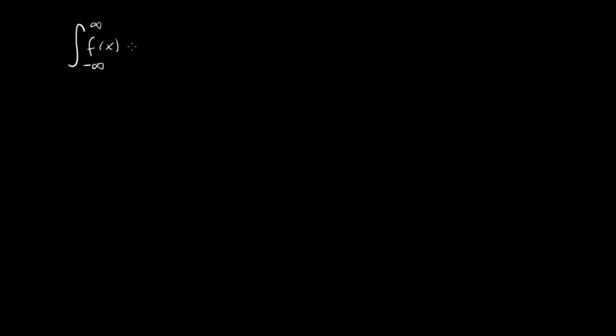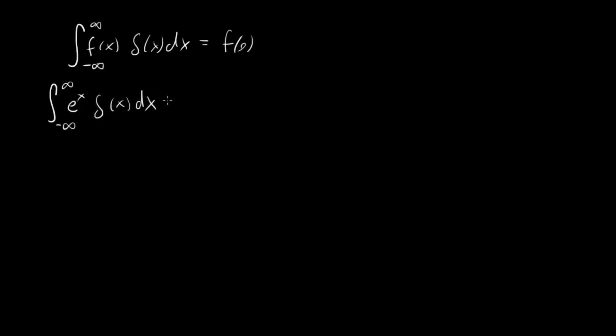Here's a good property. Let's apply it to some other problems. The rule is: integral from minus infinity to infinity of f(x) delta(x) dx equals f(0). As one example, integrating e to the x times delta of x dx — the delta function is picking out the point where x equals 0, so that's e to the 0, also known as 1. Easy enough.